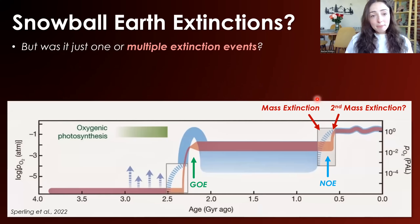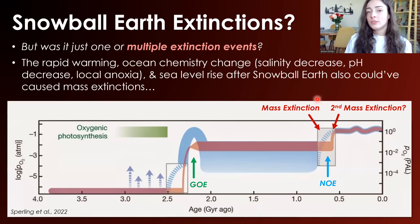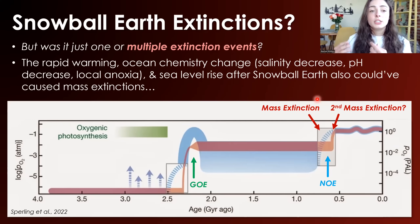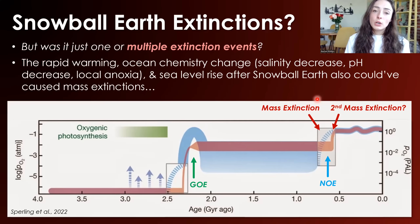Here's a twist: it might have been multiple extinction events rather than just one. After the Snowball Earth event, there was rapid warming and ocean chemistry change — salinity decrease from melting fresh-water ice, a pH decrease because warming was associated with atmospheric carbon increase, and local anoxia from phototrophic blooms. Rapid atmospheric and ocean warming, sea level rise due to all the ice melting — this could have caused another or continued mass extinction event right after the Snowball Earth event itself.